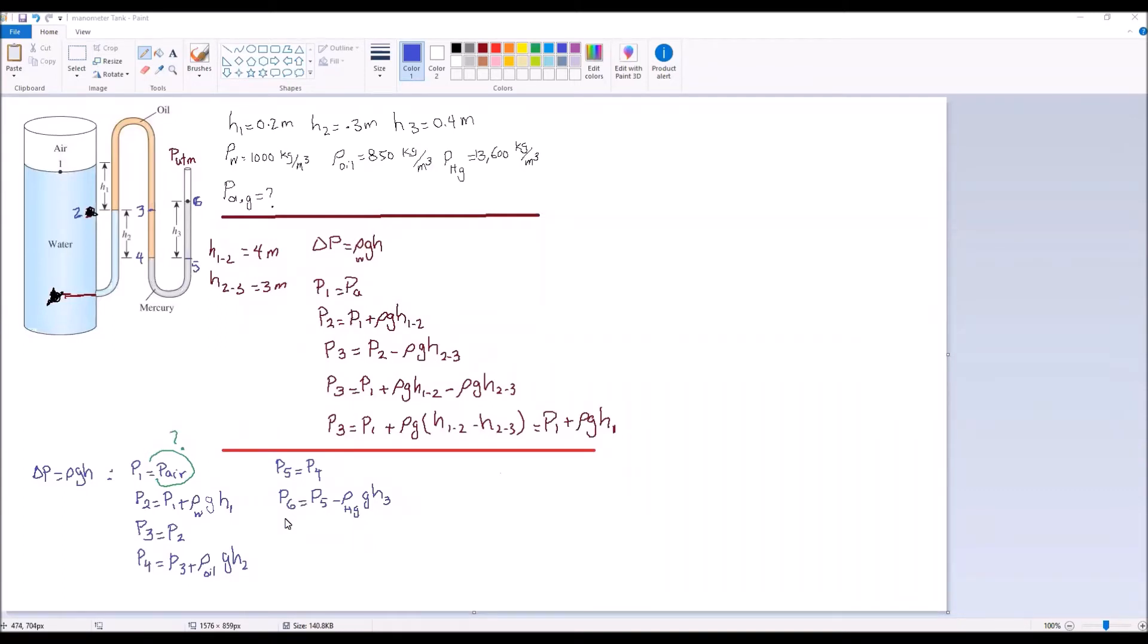So now that we have a set of all the equations, we can finally calculate P air. So I'm going to write it here, starting from left then. P air plus rho water GH1 plus rho oil GH2 minus rho mercury GH3 will be equal to P6, which is atmospheric pressure.